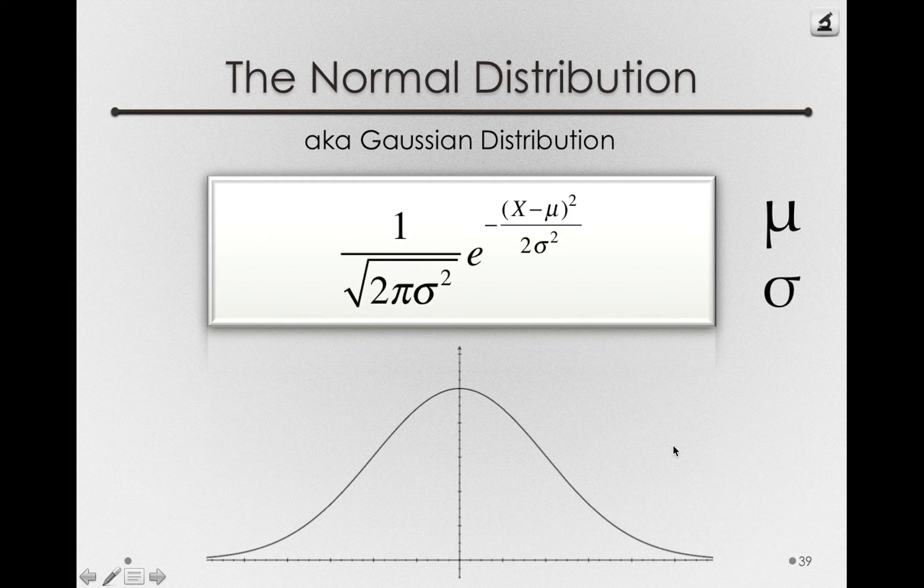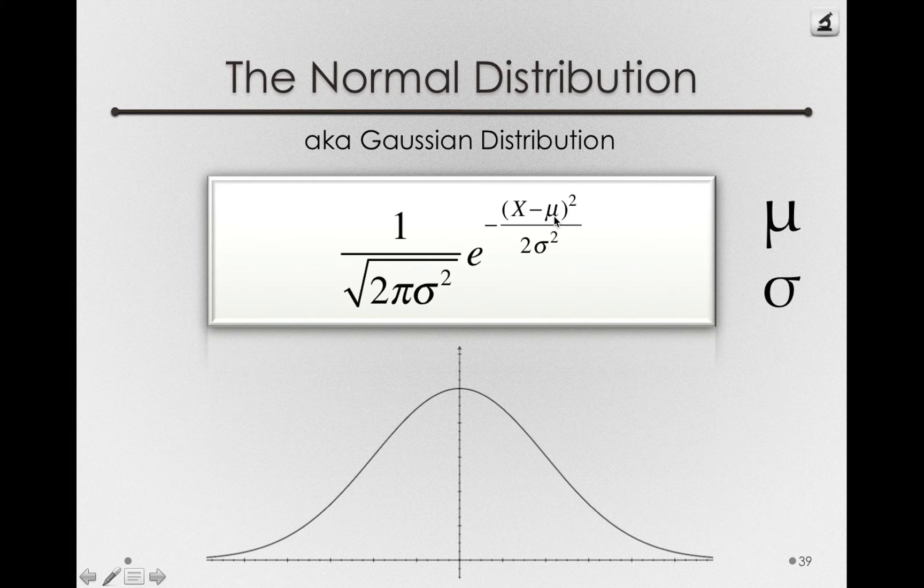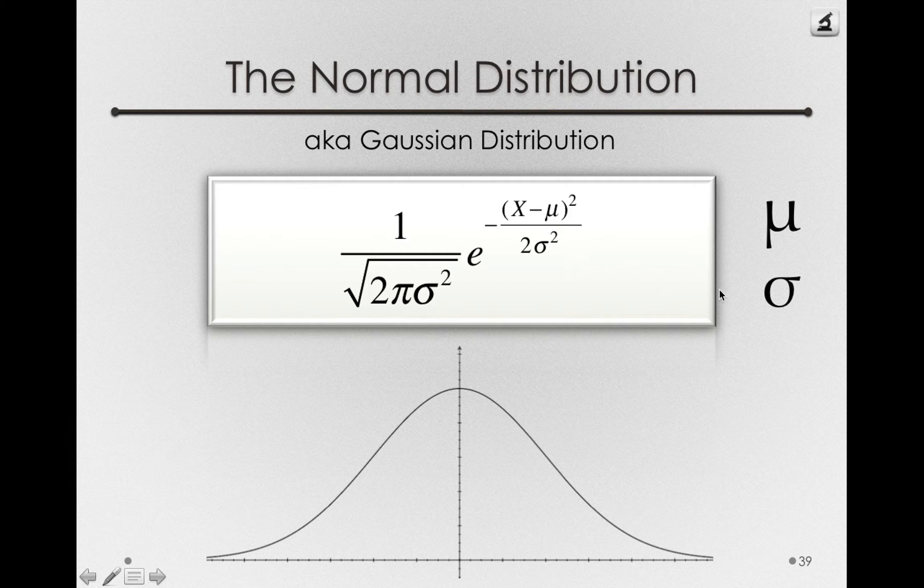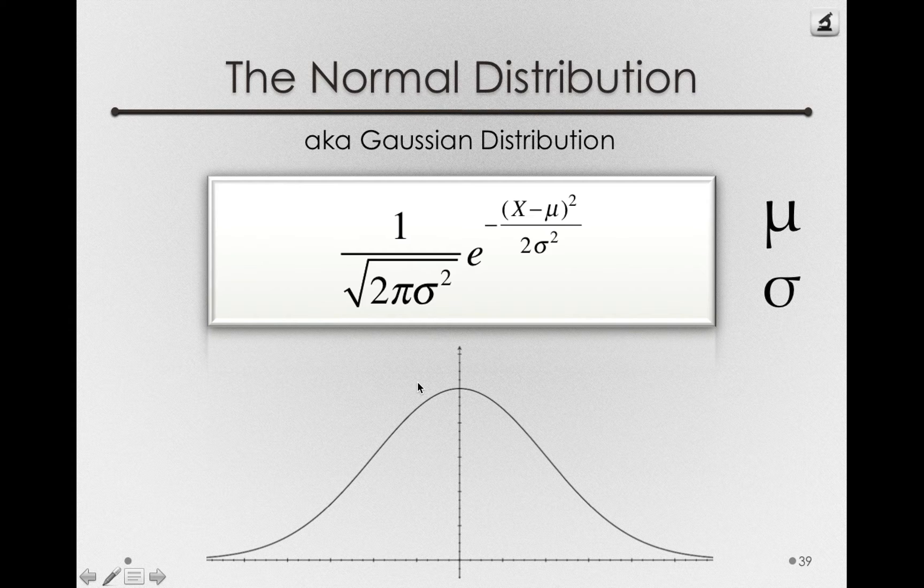That is, we need to provide this function with a value of mu, the mean of the distribution, and a value of sigma, the standard deviation of the distribution. Everything else in this function is a constant.